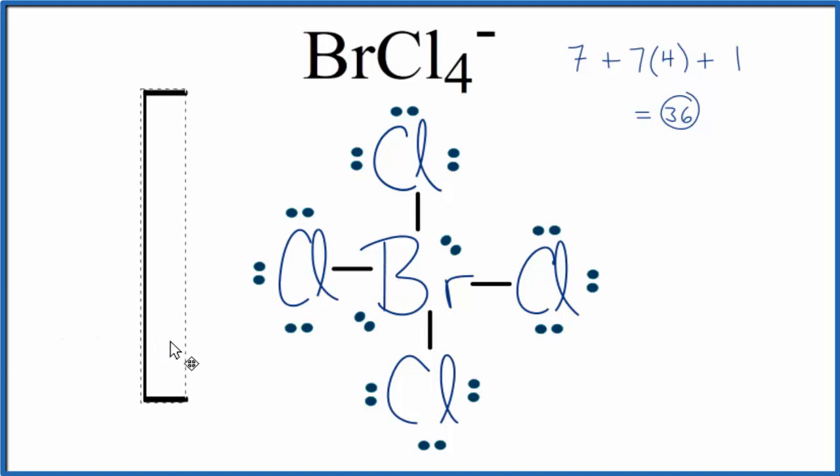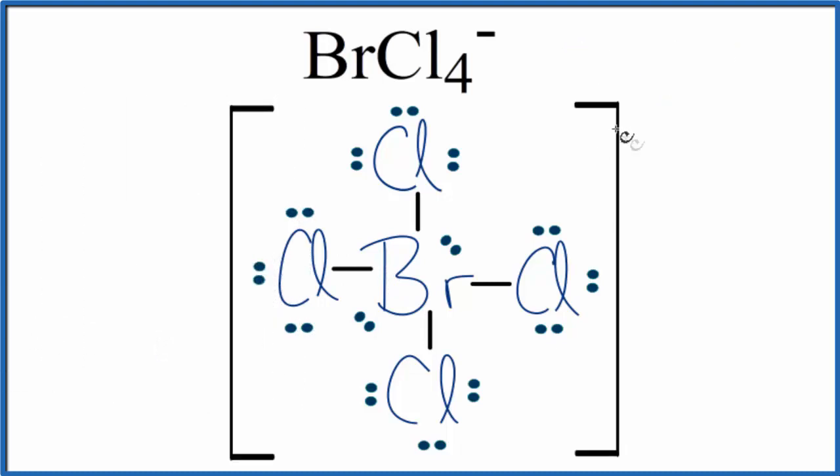And we should put brackets around the whole thing because it's an ion. And finally, let's put our negative charge out here. So this is the Lewis structure for BrCl4-.